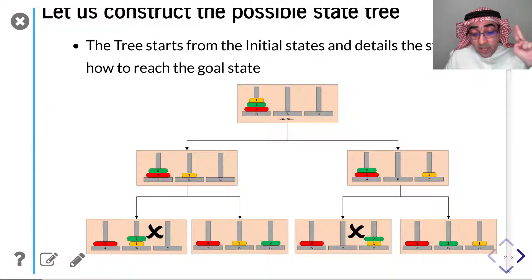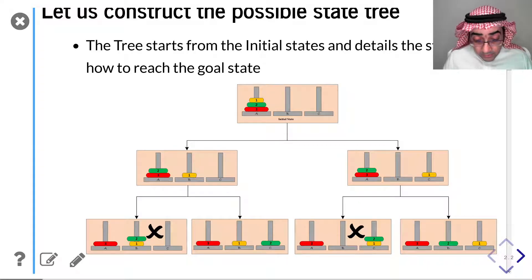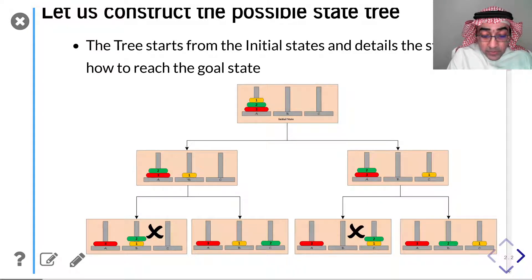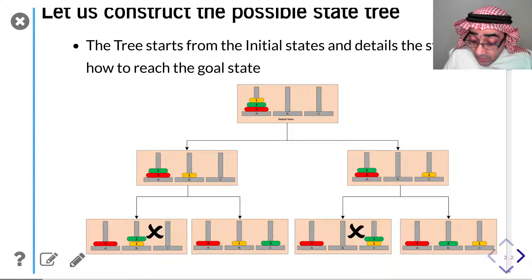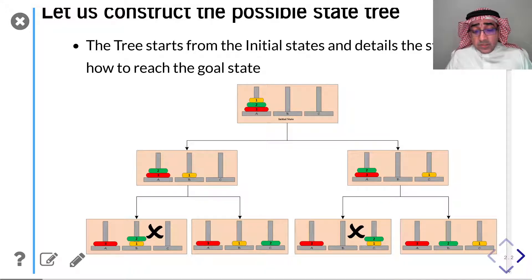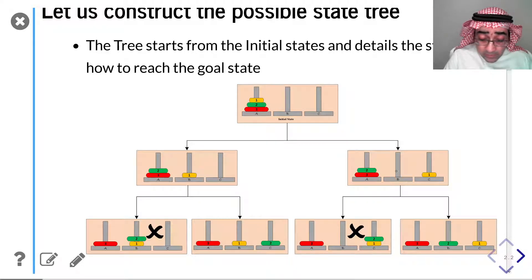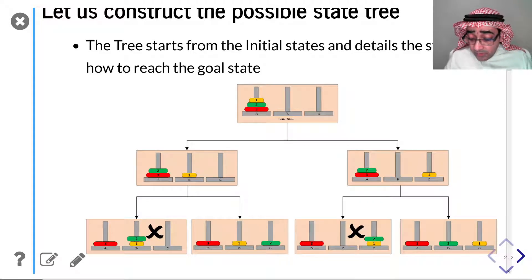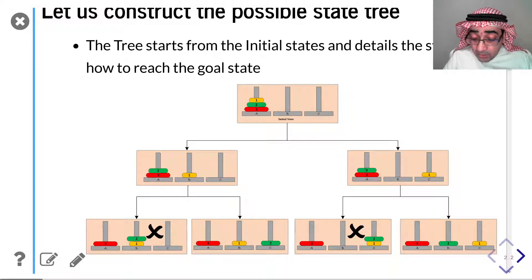I have these two options, so I draw lines and show the states I'm in. Notice I did not violate any constraints — all three constraints are satisfied. I moved one disk, I only moved the top disk, and I did not place any larger disk on a smaller one. This is the tree and you can see how it's expanding — we have a left branch and a right branch. Let's take the right-hand branch: I can move pin one back to pin A, but that takes us back to the previous state, which we don't want.